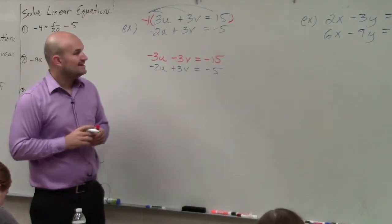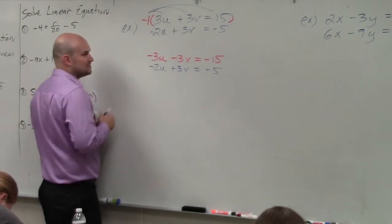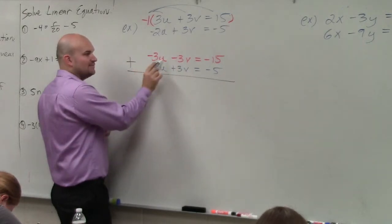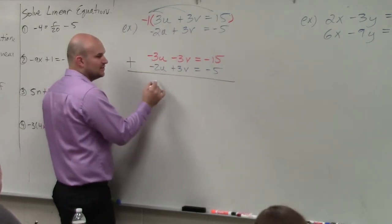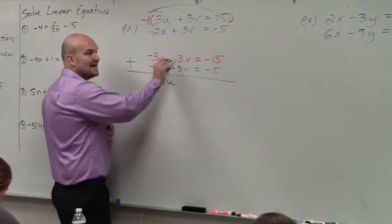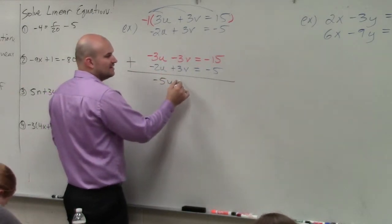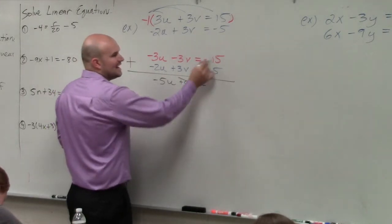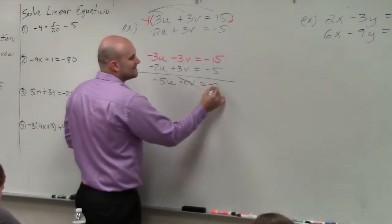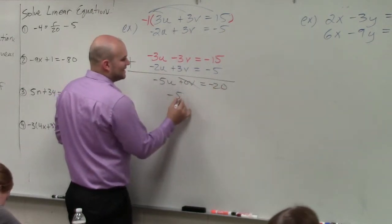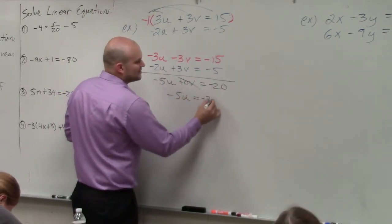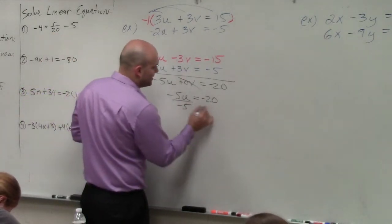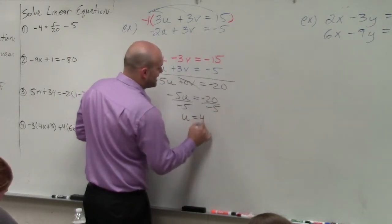OK? Now, I am going to add the two equations. Because now what I have is a negative and a positive. So negative 3u minus 2u is a negative 5u. Negative 3v plus 3v is 0v, which is just 0. Negative 15 plus a negative 5 is a negative 20. So I have negative 5u equals negative 20. Can I now solve for a variable? Yes. Divide by negative 5. So I have u equals positive 4.